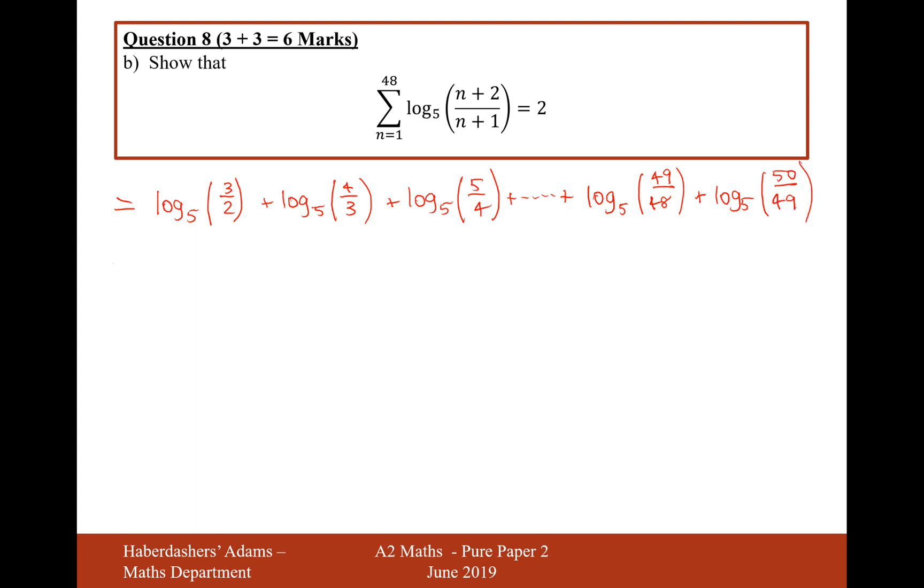Now, how are we going to add all of these logs together? Well, this question is not really much of a summation question, it's more of a logs question, because you can always write log 3 over 2 as log 5 of 3 minus log 5 of 2. And then the next term will be done the same, log 5 of 4 minus log 5 of 3. And the next term can be done the same as well, log 5 of 5 minus log 5 of 4.